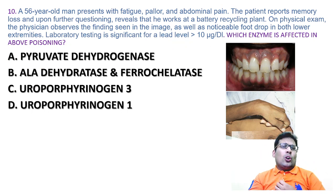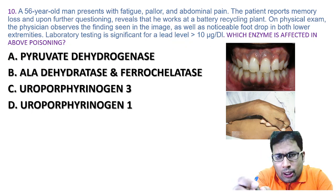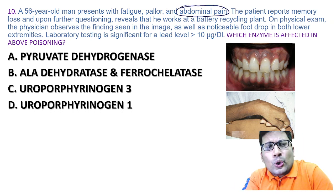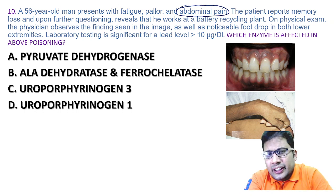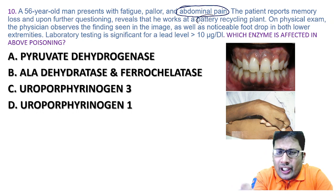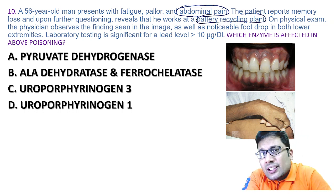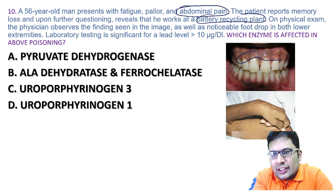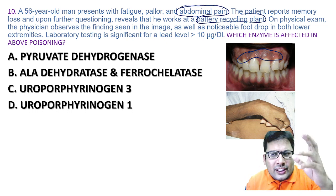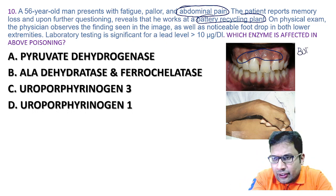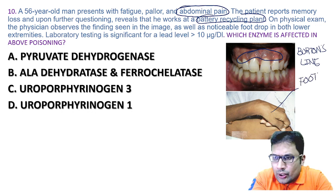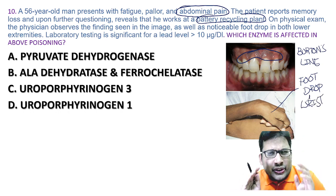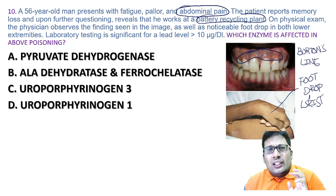Question 10: a 56-year-old man with pallor, abdominal pain, and memory loss who works at a battery recycling plant. Battery work is a known risk factor for lead poisoning. On physical examination: Burton's line at the junction of the teeth and gum, and foot drop (or wrist drop) due to motor neuropathy — lead causes motor neuropathy. Blood lead level is more than 10. The question asks which enzyme is affected. The answer is ALA dehydratase and ferrochelatase — the correct answer is B (the option containing ferrochelatase or ALA dehydratase). These are rate-limiting enzymes of haem synthesis. KSN Reddy page 412.